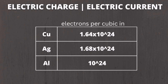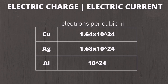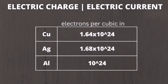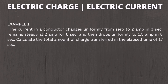From certain conductors, there are numbers of free electrons available to move, as shown in the table. For copper, we have 1.64 times 10 raised to 24 electrons per cubic inch. For silver, we have 1.68 times 10 raised to 24 electrons per cubic inch. For aluminum, we have 10 raised to 24 electrons per cubic inch. We will use this table later to solve problems.